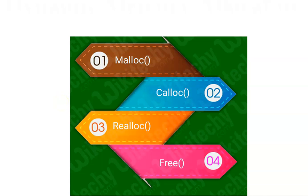Welcome back. In this chapter, we will discuss dynamic memory allocation — what it is, and what functions are used. The major functions are malloc, calloc, realloc, and the free function to release memory. The first three functions are used to allocate memory and the last one is used to free the memory.